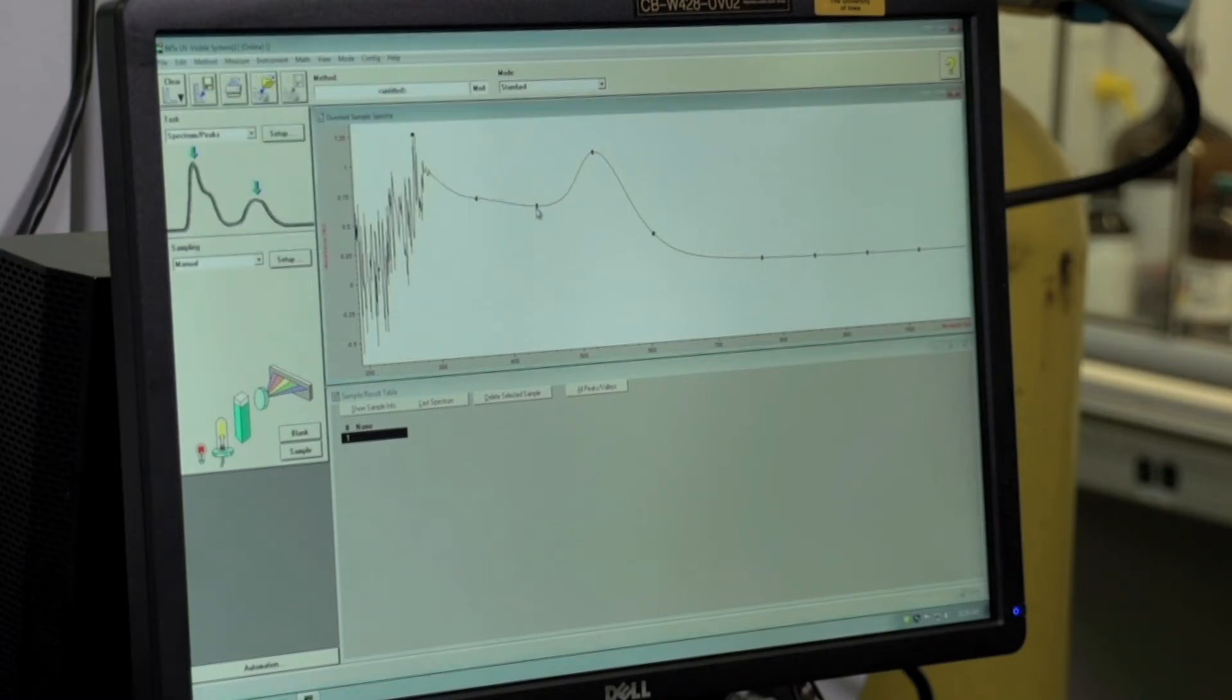After you've saved your file, you'll need to delete the spectrum that's present so that you can take another sample. So just make sure it's still highlighted and click on delete selected sample.